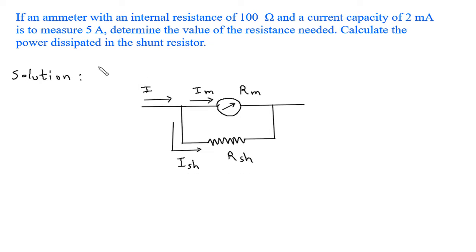So this is a meter, this is the resistance of the meter, this is the current through this meter or the maximum current this meter can read. This is a shunt resistance, this is the current through this shunt resistance, and this is the total current or current to be measured.